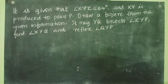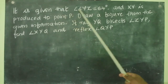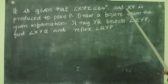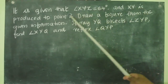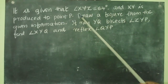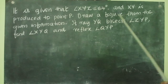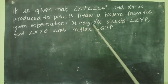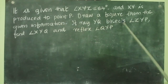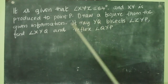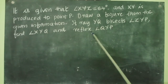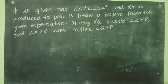Exercise 6.1, Question No. 6. It is given that angle XYZ equals 64 degrees and XY is produced to point P. Draw a figure from the given information. If ray YQ bisects angle ZYP, find angle XYQ and reflex angle QYP.